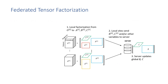Next, the server aggregates the local factors and updates the global feature factor matrices B and C. Finally, the server sends the global factors back to local sites. The process repeats until it converges.